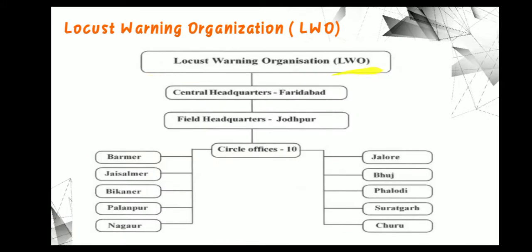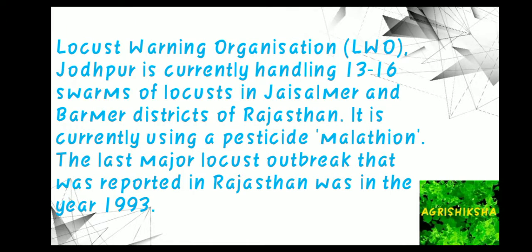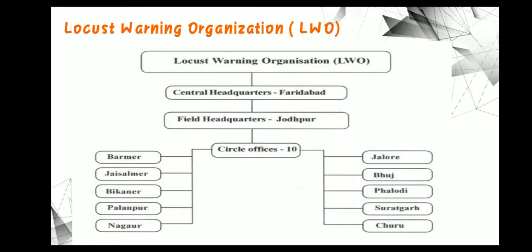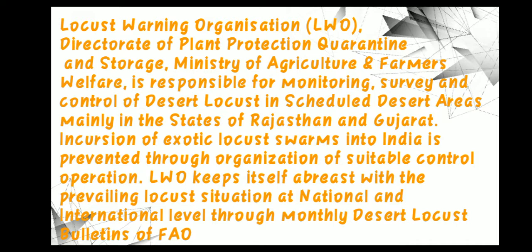The LWO has its central headquarters at Faridabad and field headquarters at Jodhpur, with 10 circle offices: Barmer, Jaisalmer, Bikaner, Palanpur, Nagar, Jalor, Bhuj, Baladi, Suratgarh, and Churu. The LWO operates under the Directorate of Plant Protection, Quarantine and Storage, Ministry of Agriculture and Farmers Welfare, and is responsible for monitoring, survey, and control of desert locusts in the Scheduled Desert Area (DSA), mainly in the states of Rajasthan and Gujarat.